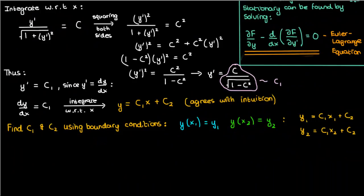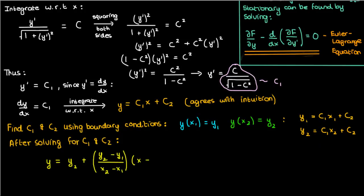But I'm going to skip the algebra. I trust that you guys can go ahead, solve these equations, and ultimately show that the geodesic on a plane is given by the following expression: y equals y2 plus (y2 minus y1) over (x2 minus x1), that's the slope, times (x minus x2).